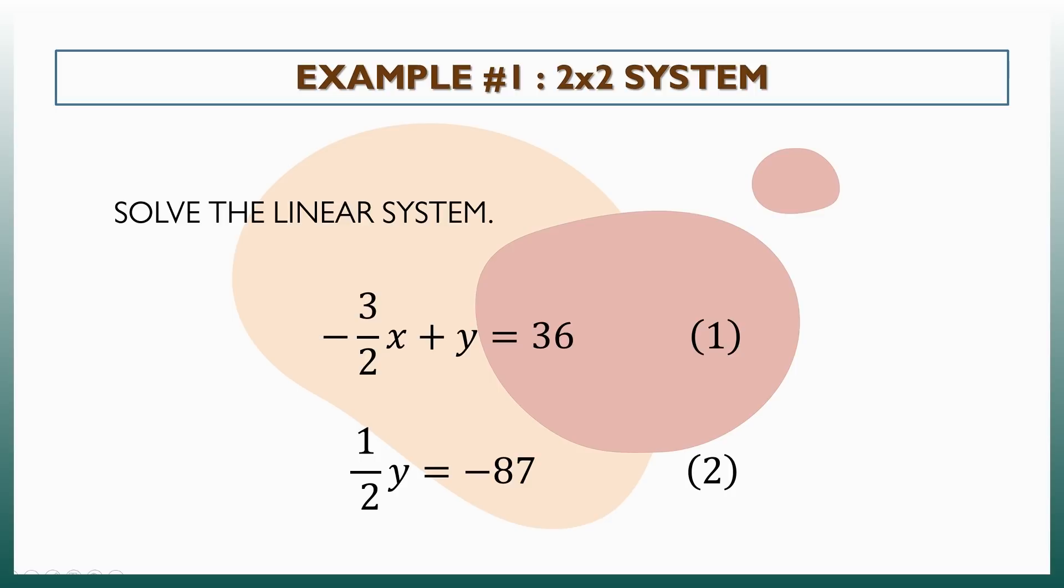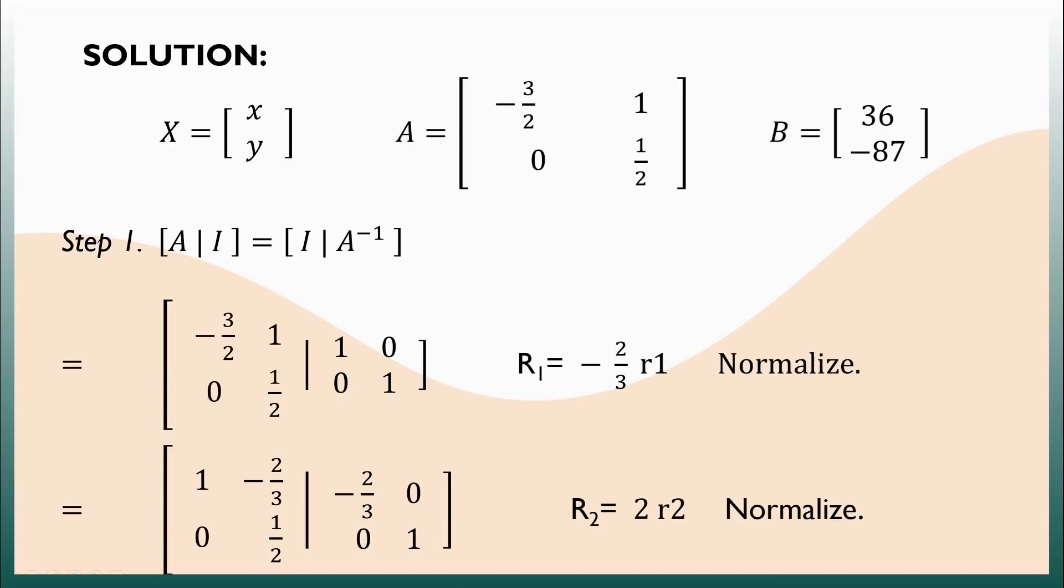Let's test our understanding of the topic by dealing with this example. It is a 2 by 2 system. A 2 by 2 system conveys that there are two linear equations in the problem. Given, the first and second equations respectively are negative 3 halves x plus y equals 36 and 1 half y equals negative 87. There are only two variables here, x and y.